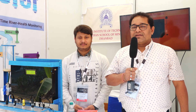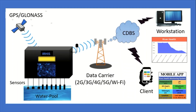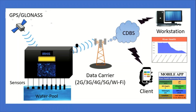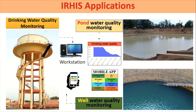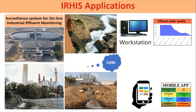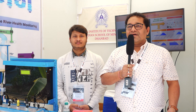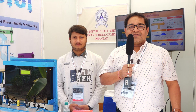We are trying to exhibit our innovation, which is based on an AI Oplik IoT system for real-time monitoring of water bodies. This system is used for water surveillance, industrial surveillance, flood alert system, and pollution alert system. Basically, it continuously measures the water quality and sends real-time data to our workstation and mobile apps.